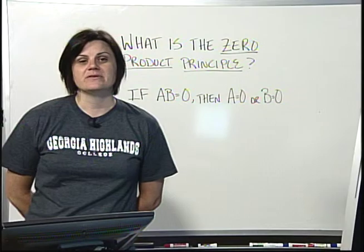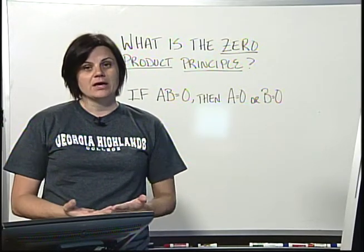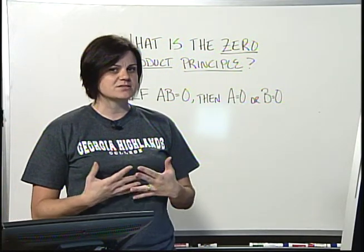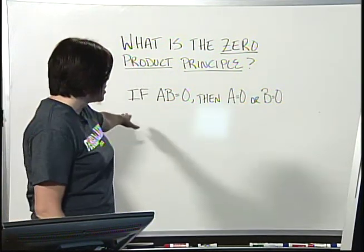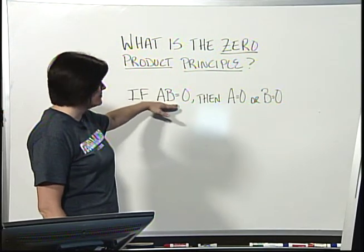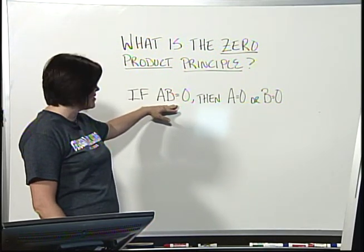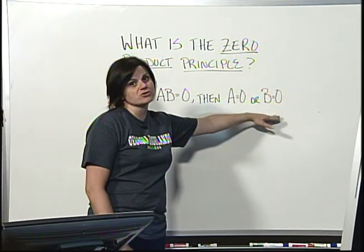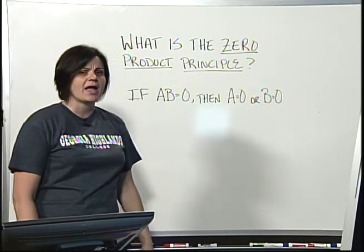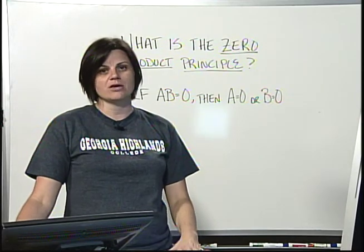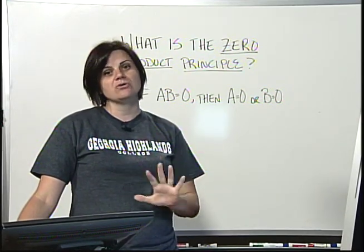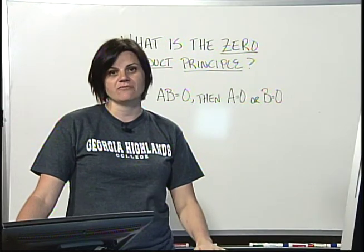I hope that this has been helpful for you in understanding the zero product principle. Once again, it's a simple principle, but it's very powerful. All it states is that if you're multiplying factors together and equaling zero, then one of those factors had to be zero. And we use this in solving quadratic equations by setting each of those linear factors up to equaling zero and then solving for it.